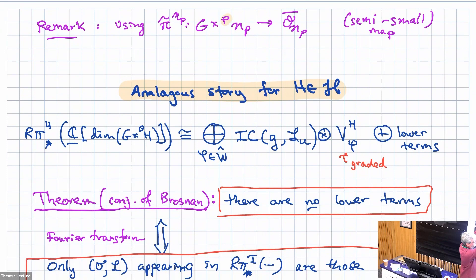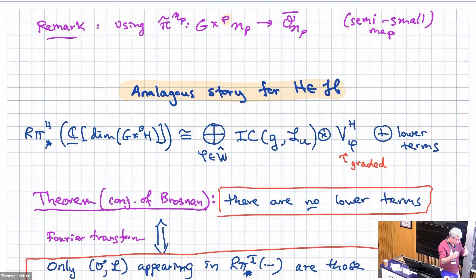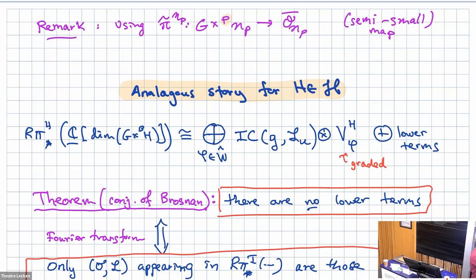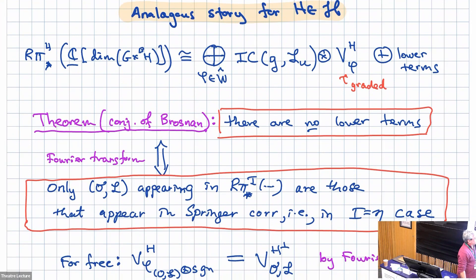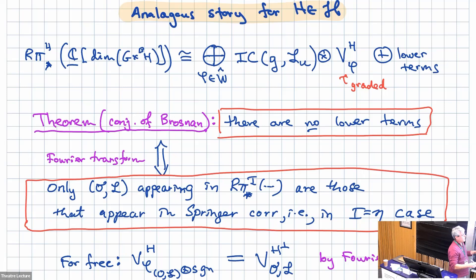Instead of being the analog of the Springer resolution, this is the analog of the Grothendieck-Springer resolution, and you also have a decomposition. What wasn't known is whether there were lower-order terms. Brosnan had conjectured there are none. What we prove with Martha is that the only local systems appearing in the pushforward are those that already appear in the Springer correspondence — the nil radical case — so you can't get any other local systems, and therefore no lower terms. Via Fourier transform, the vector spaces that show up for H are the same as for I, up to tensoring with sign. This was already proved by Balibanu and Crooks in type A.